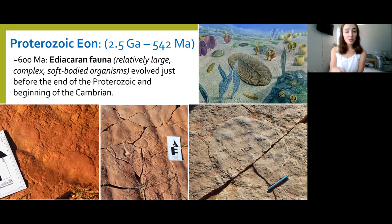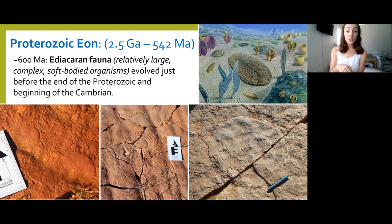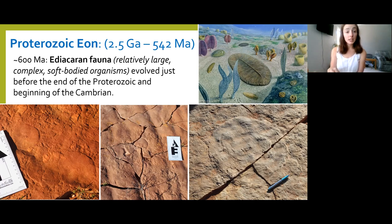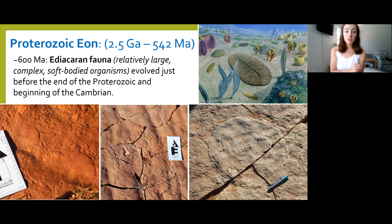The Ediacaran is a time period within the late Proterozoic, or Neoproterozoic, around 600 million years ago. During this time, we find a lot of soft-bodied organisms in the rock record that, although pretty simple compared to the Cambrian explosion, are still very large and complex compared to earlier life, which was pretty much single-cellular. We call this fauna the Ediacaran fauna. We're very lucky we have these records because, without hard parts, soft-bodied organisms are difficult to preserve.